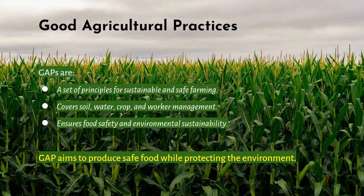The definition of Good Agricultural Practices. Basically, these are a set of principles for sustainable and safe farming. It covers soil, water, crop and worker management. It also ensures that the food is safe and supports sustainable farming. GAP aims to produce safe food while protecting the environment.